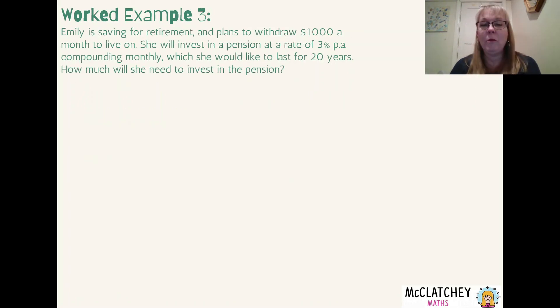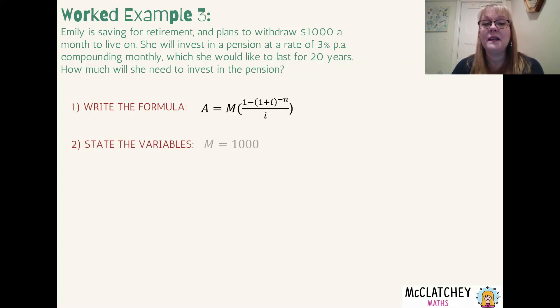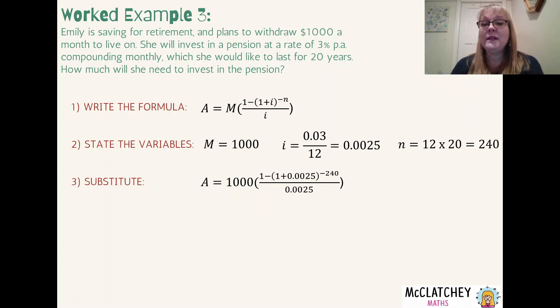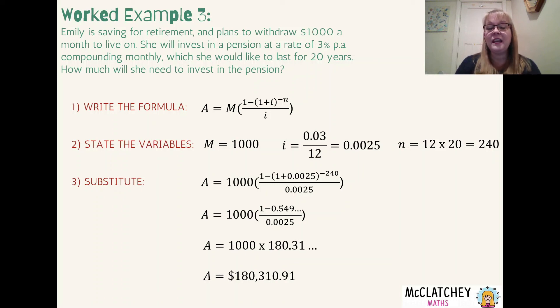Okay final example, now complex question as well. Emily is saving for retirement and plans to withdraw $1,000 a month to live on. She's going to invest in a pension at a rate of 3 percent per annum compounding monthly and she wants it to last for 20 years. How much does she need to invest in the pension? Okay so once again because she is withdrawing money out we know straight away it's going to be a present value formula that we're going to be using. And we're going to write our formula again and state our variables again. So we've got M is our, not a repayment this time, it's our withdrawal, our regular withdrawal. And our interest rate converted to a rate per compounding period is 0.0025. And we've got 20 years times by 12 months, 240 payments all together. Okay let's substitute that into the formula. Looks a little bit unwieldy but we'll be able to work with that. Let's narrow that down a little bit on our calculator, work with me here. And you're going to work out that it's about 180 dollars and 31 cents with a whole lot of decimal places at the end that we need to multiply by a thousand. So what she needs to live on that pension for 20 years is $180,310.91.